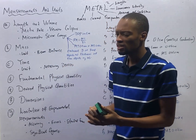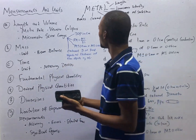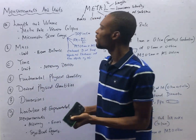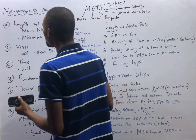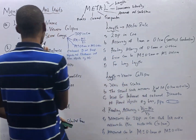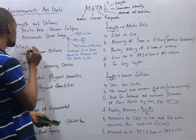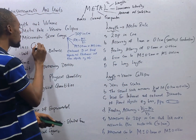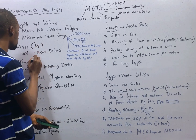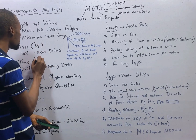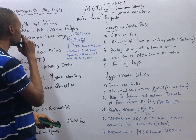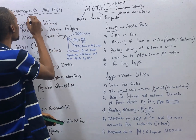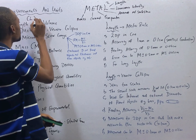For every quantity, you have a dimension. Looking at the three main fundamental quantities: the dimension for mass is capital M, the dimension for time is capital T, and the dimension for length is capital L.